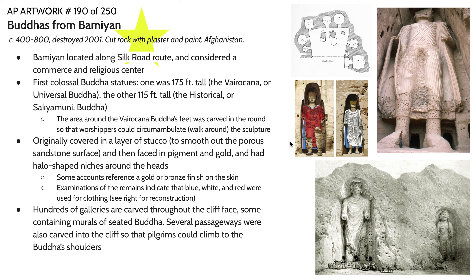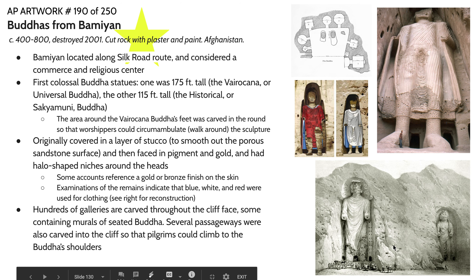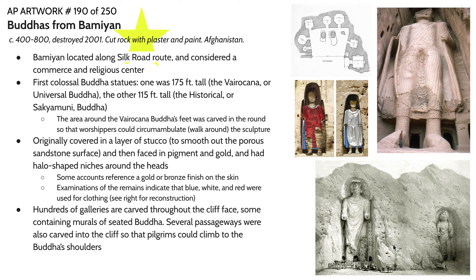When you look at more images of Bamiyan, you can see there are hundreds if not thousands of galleries carved into the surface of the cliffside. A lot of these galleries go into the mountain, and a couple actually lead up to the shoulder of the Buddha — so you could actually stand on the Buddha's shoulder. Many of these different niches contained murals, and a couple are still intact.